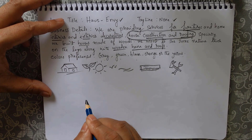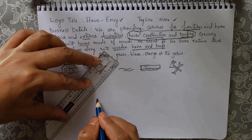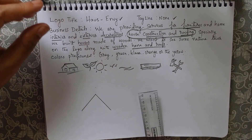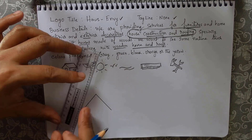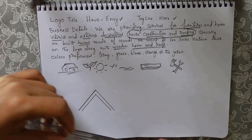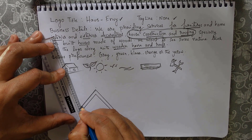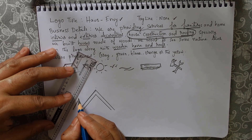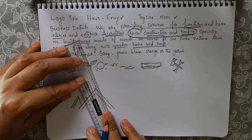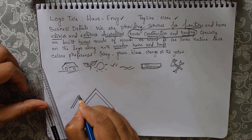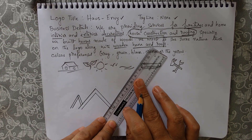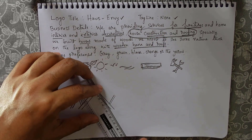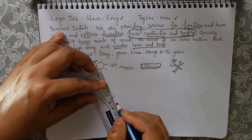I'll start here from the roof — I'll draw a roof. We can use a scale as well to make it look more perfect. This is the roof of the house. Here we'll draw another roof from here. These are the common shapes we use in logo designing, and this side as well we'll use the same roof. This is a rough sketch; I'm not making it fully perfect here because it will take too much time.